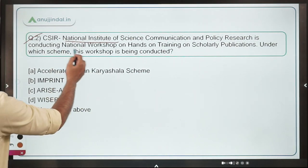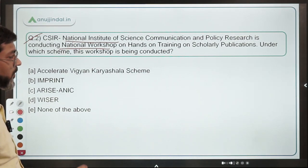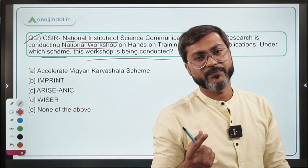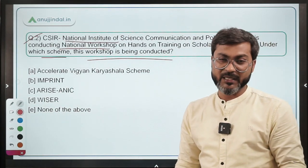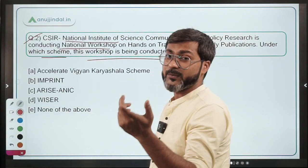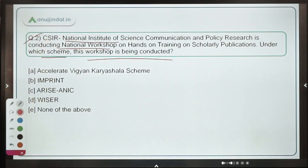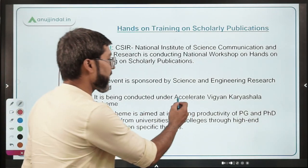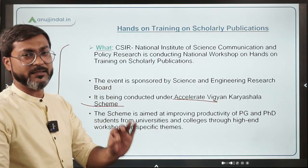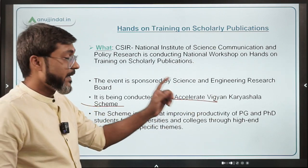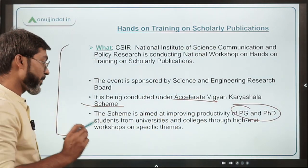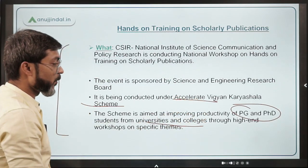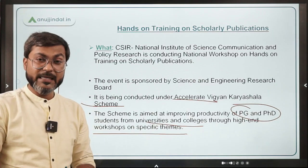Moving to question two: CSIR National Institute of Science Communication and Policy Research is conducting a national workshop on hands-on training on scholarly publications. The question is: under which scheme is this workshop being conducted? This workshop is being conducted under the Accelerate Vigyan Karyashala Scheme, aimed at improving the productivity of postgraduate and PhD students from universities and colleges.